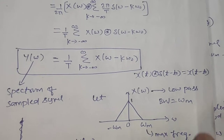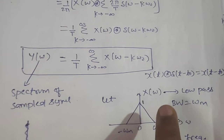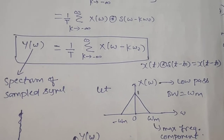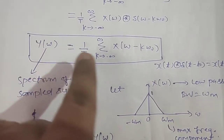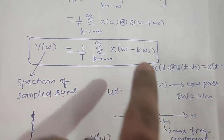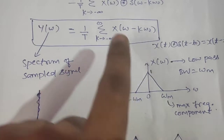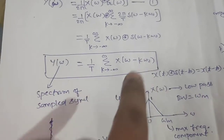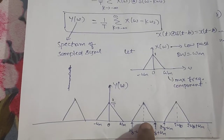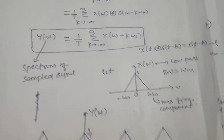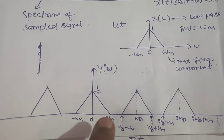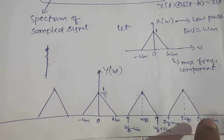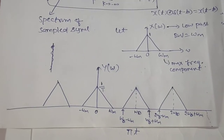Let us understand this with an example. I am taking the spectrum of x(t) as X(ω), spanning from minus ω_m to ω_m, where ω_m is the maximum frequency component — a low-pass signal with bandwidth ω_m. Y(ω) is 1/T times shifted versions of X(ω). At k equals 0 it is X(ω)/T; at k equals 1 it is shifted to ω₀; at k equals 2 it is shifted to 2ω₀. The spectral boundaries are ω_m, ω₀ minus ω_m, ω₀ plus ω_m, 2ω₀ minus ω_m, and 2ω₀ plus ω_m. This is the spectrum of the sampled signal.